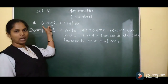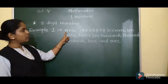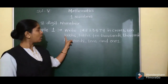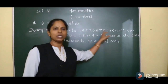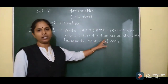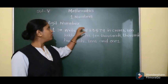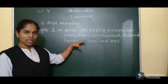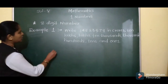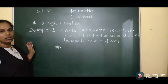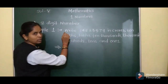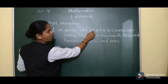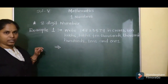Now we will see one example of an 8-digit number. Write the given number in crores, 10 lakhs, lakhs, 10,000, thousands, hundreds, tens, and ones. The given number is an 8-digit number — counting 1, 2, 3, 4, 5, 6, 7, 8 digits. We just learned that in an 8-digit number, the smallest 8-digit number starts with crores.